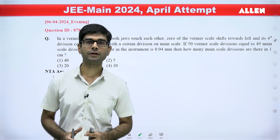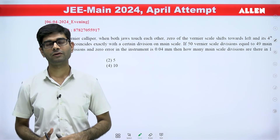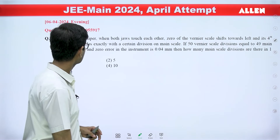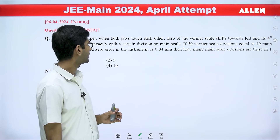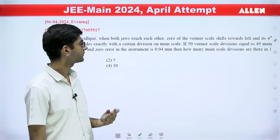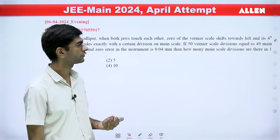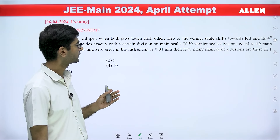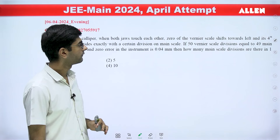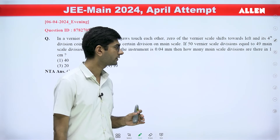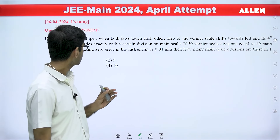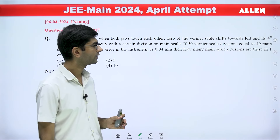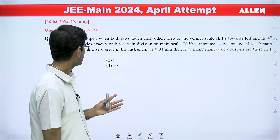We are looking at the 6th April evening shift physics paper, taking two questions. The first one: in a vernier caliper when both jaws touch each other, the zero of the vernier scale shifts towards the left and its fourth division coincides with a certain division on the main scale. If 50 vernier scale divisions equal 49 main scale divisions and the zero error is 0.04, then how many main scale divisions are there in 1 centimeter?